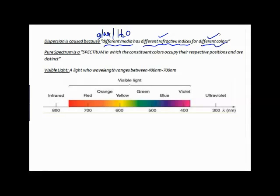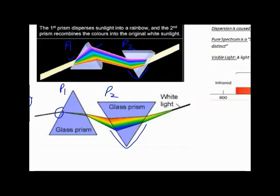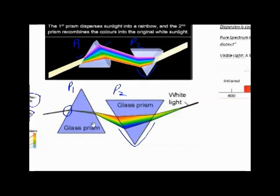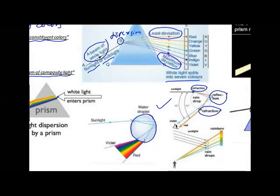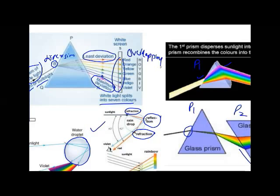In previous experiments, a narrow beam of sunlight was obtained by making a small hole in cardboard, but the beam coming out is diverging. The rays are incident at different angles on the prism, so the spectra corresponding to these rays are projected at different angles on the screen, causing the spectra formed to be slightly different from one another.